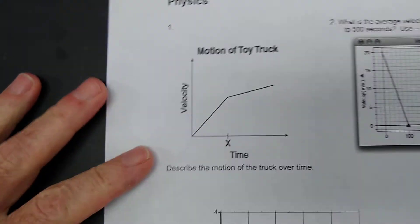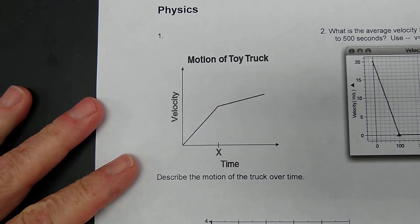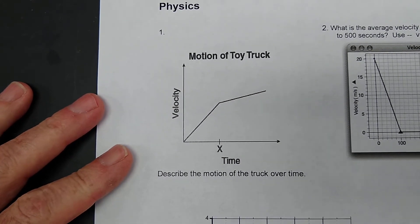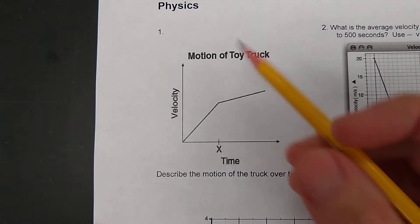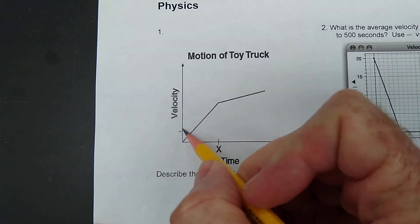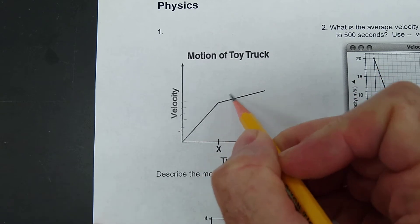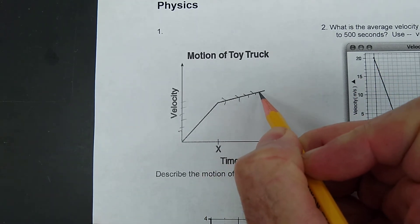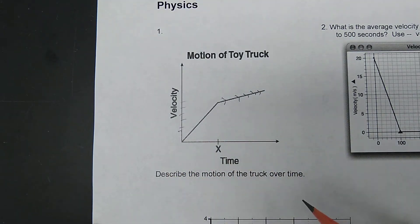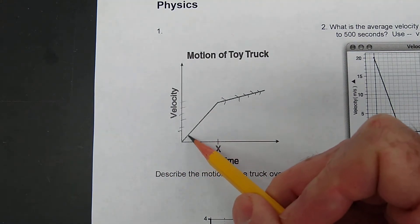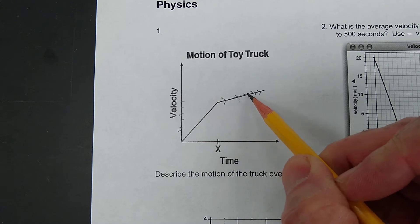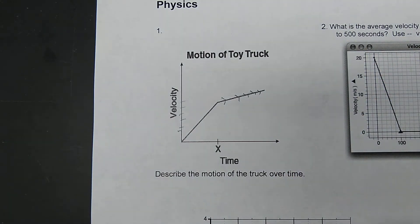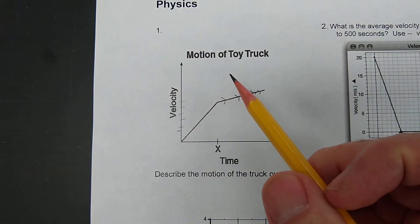Let's zoom in and take a look at this first one. Describe the motion of the truck over time. Does this truck have a constant velocity? The answer is no. The velocity is increasing at a certain amount, and then when we get to this point the line becomes less steep. So the velocity is not constant — this truck is speeding up and speeding up. Then when we get to this point, it's still accelerating, just not at the same amount. This shows acceleration that is not constant.